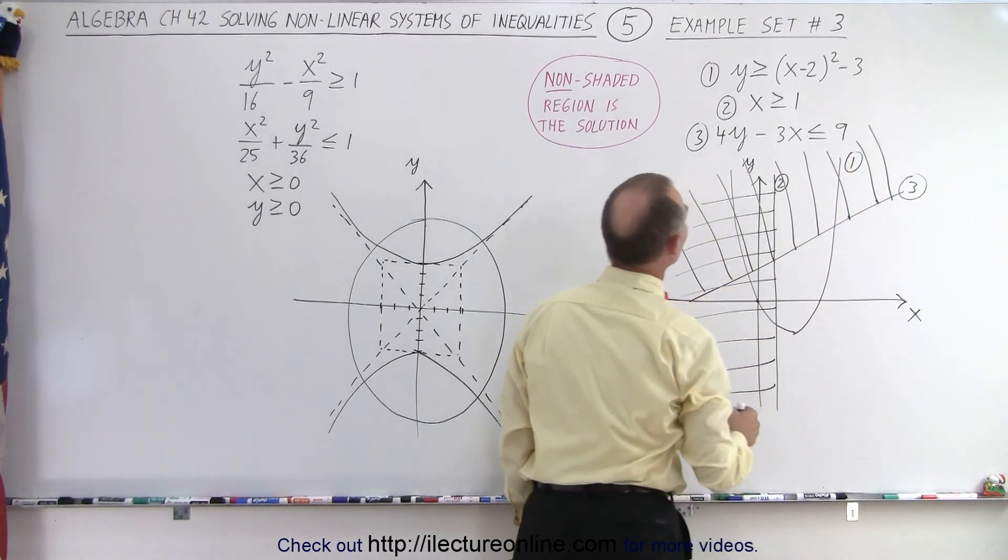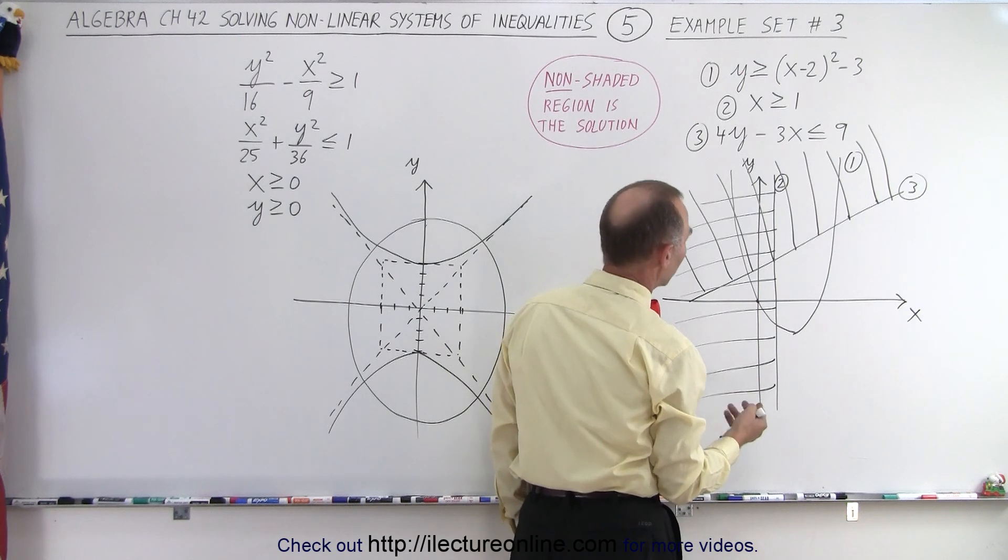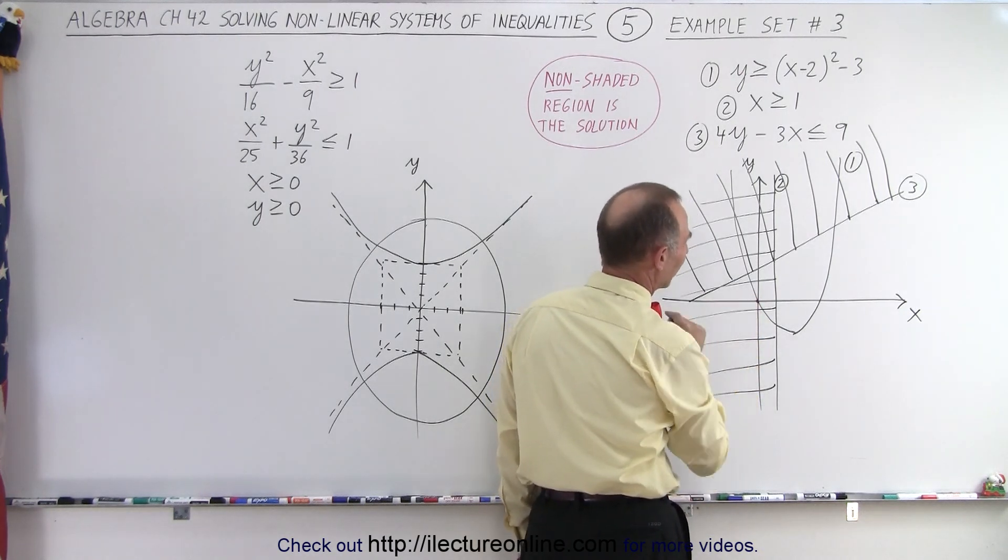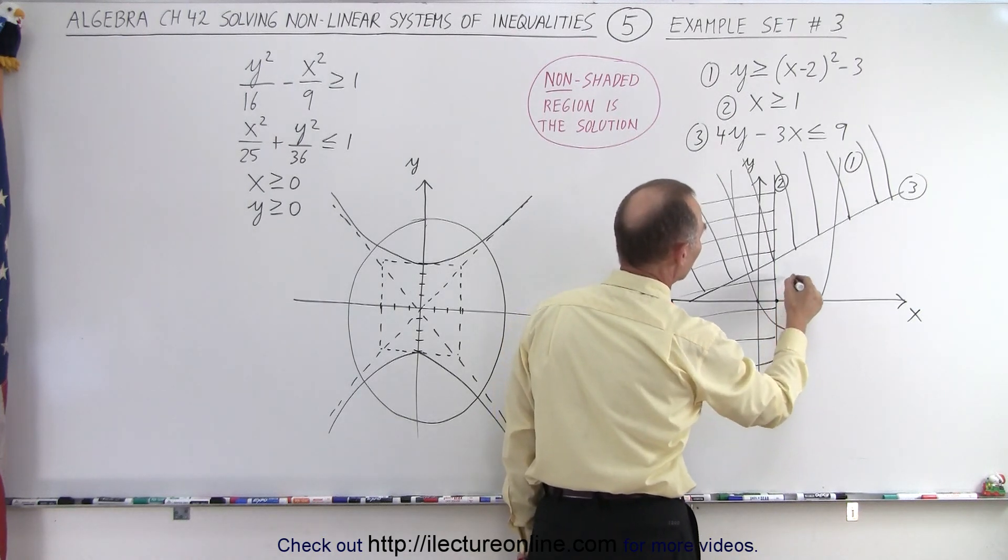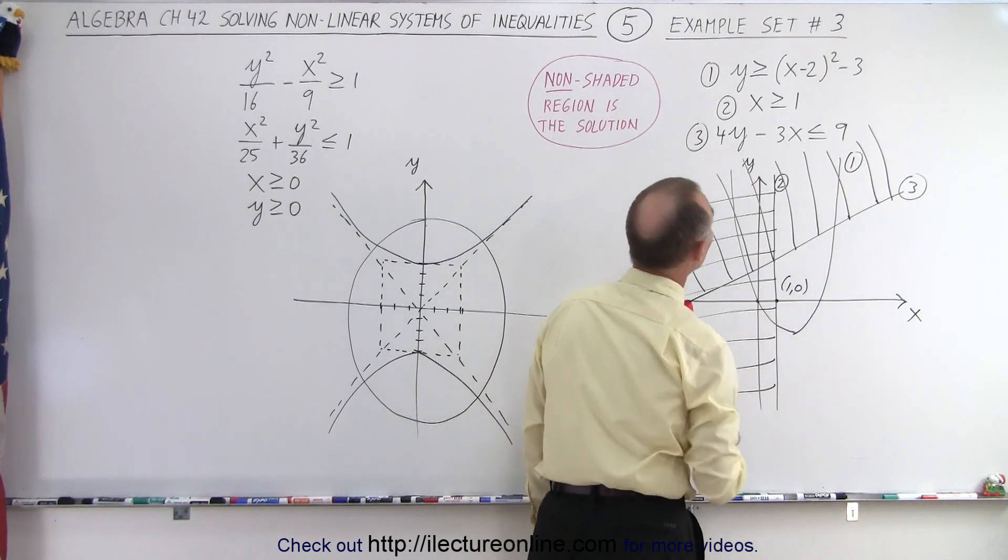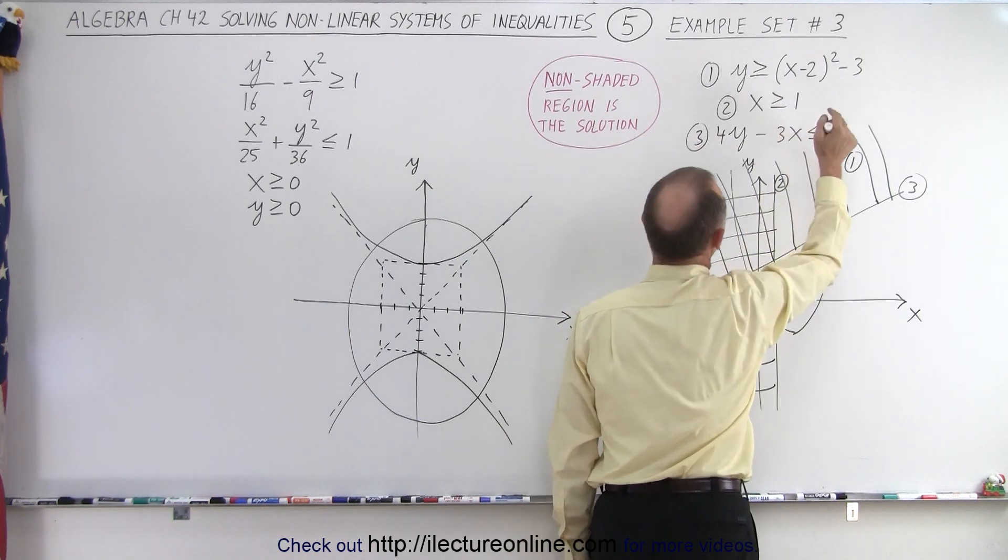And finally, we get to number one. Now, that's a parabola. You can see that the point zero, zero may be in or outside regions. That's not a good region to use, but we can use this point right here. We can use the point one comma zero, which is clearly inside the parabola. And if we plug in zero for y and one for x, what do we get?